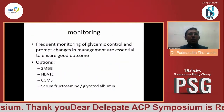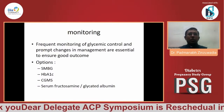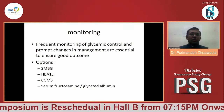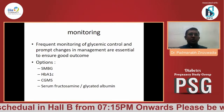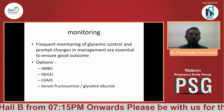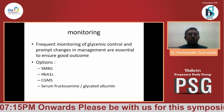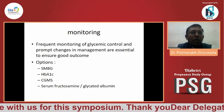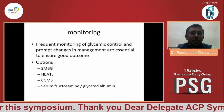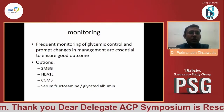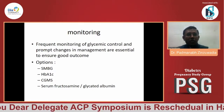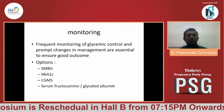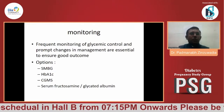From the monitoring aspect, frequent monitoring of glycemic control and prompt changes in management are essential to ensure good outcomes. Options include self-monitoring of blood glucose (SMBG), HbA1C, CGM, and serum fructosamine assay. CGM has been well explained by Dr. Arun Shankar. SMBG is easily available, approachable for every patient, and cost-effective. Depending on the patient's needs, we can ask for one sugar check per day up to three, four, five, or even seven profiles per day.